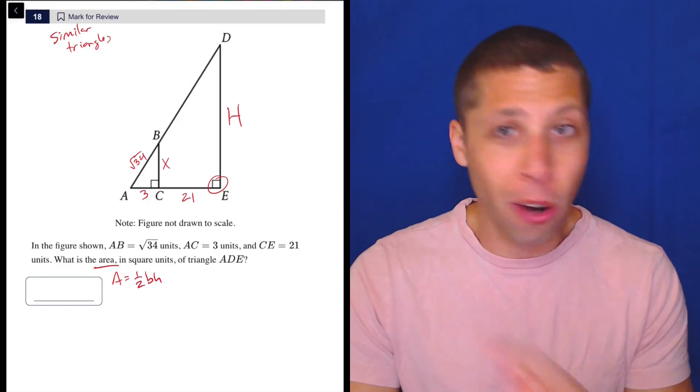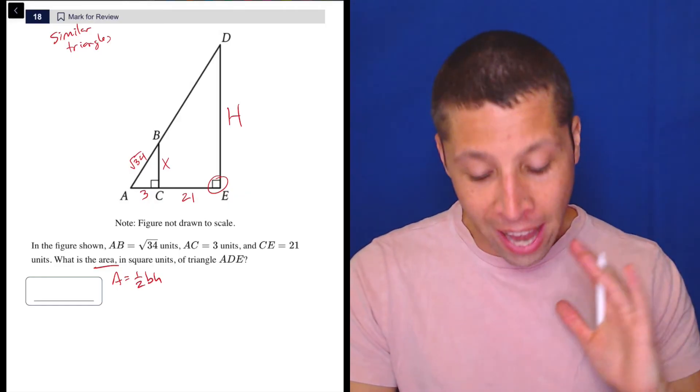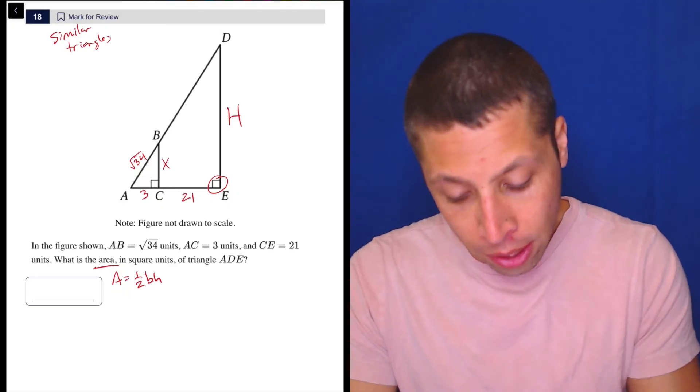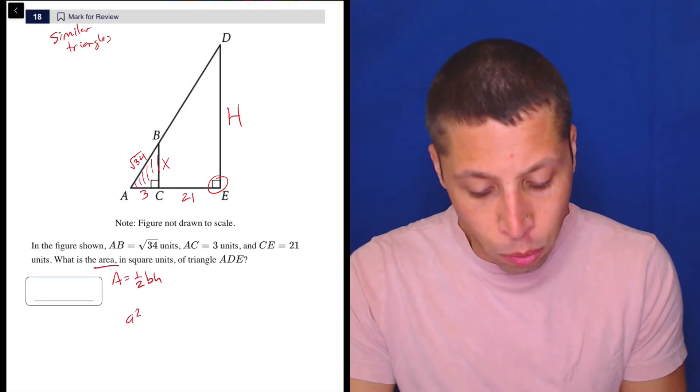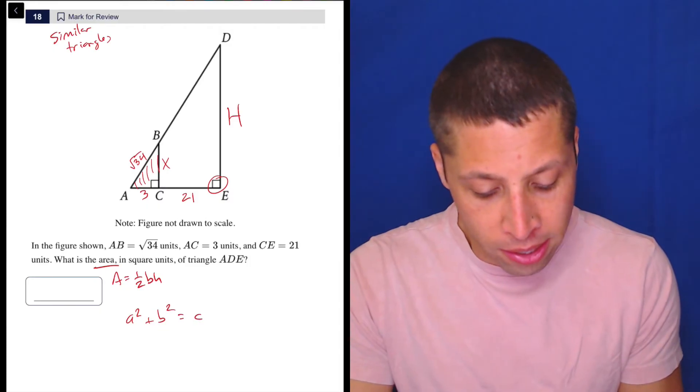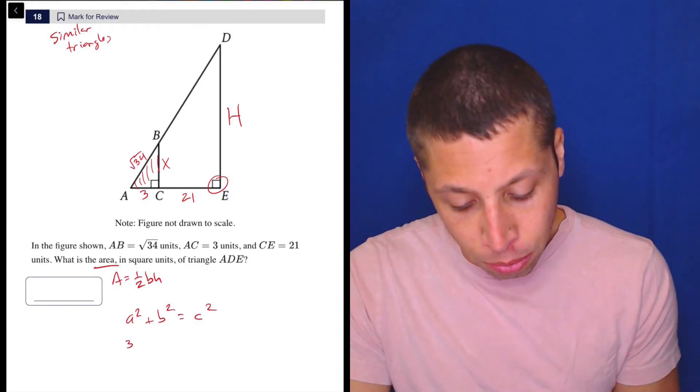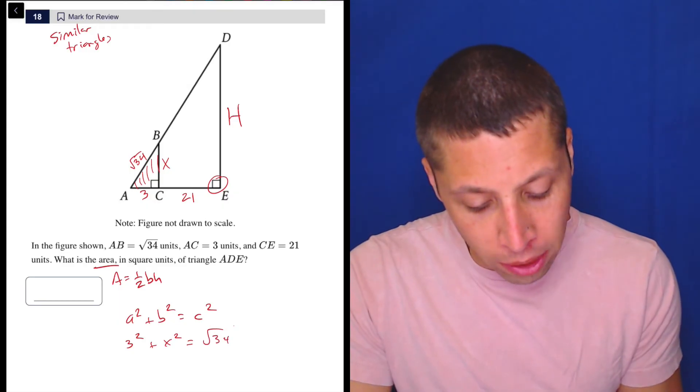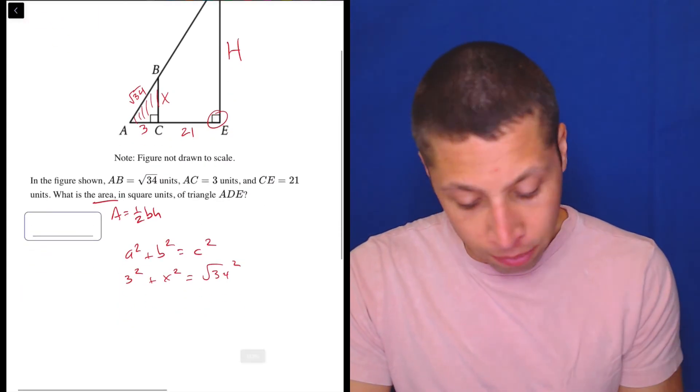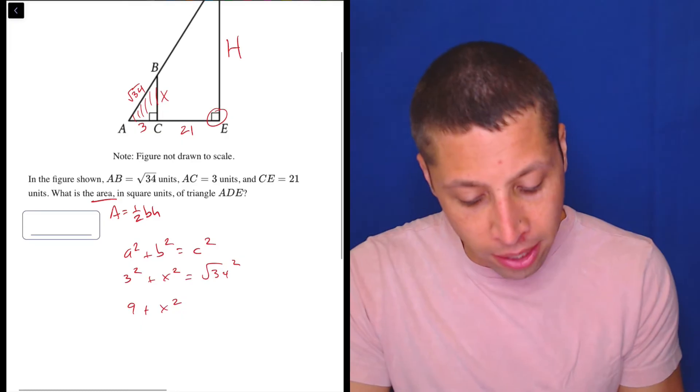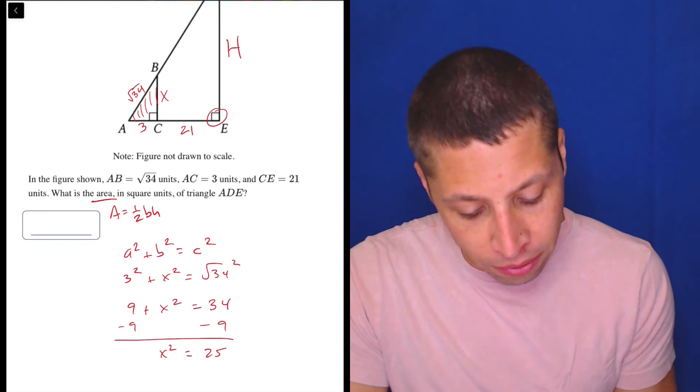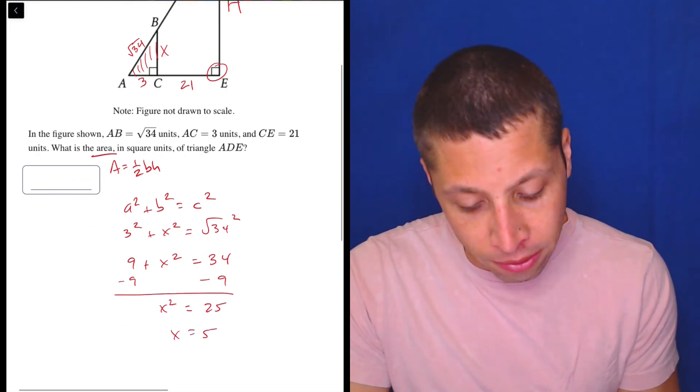The first thing I see is I've got a triangle with two sides, and it's a right triangle. So that is Pythagorean theorem. So that's going to be this triangle here. We're going to do A squared plus B squared is C squared. So A is 3. X is my B. And radical 34 is my C. So we can very easily do this. 9 plus X squared is equal to 34. Subtract the 9. X squared is 25. And so X is 5. So nice and easy.